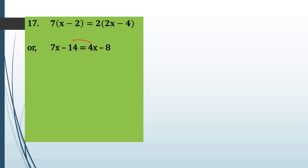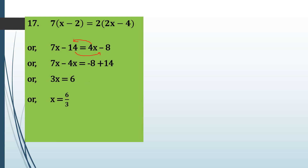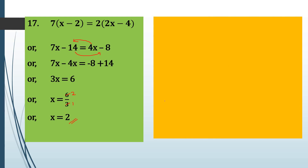We will take the variable to the left side and the constant to the right-hand side. So this becomes 7x minus 4x equals minus 8, and minus 14 will become plus 14. Now 7x minus 4x is 3x, and minus 8 plus 14 is 6 because they have different signs so they subtract, but the sign of the higher number is used, giving plus 6. So x equals 6 over 3, and 3 times 2 is 6, therefore the value of x is 2.